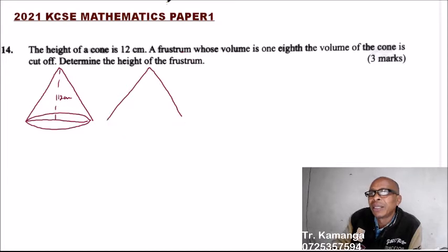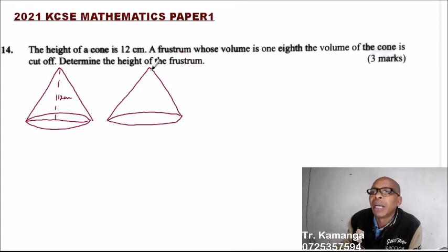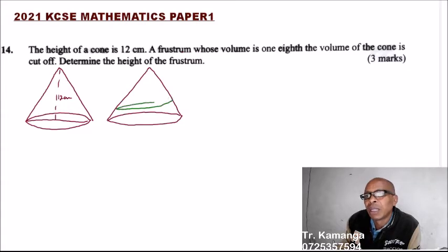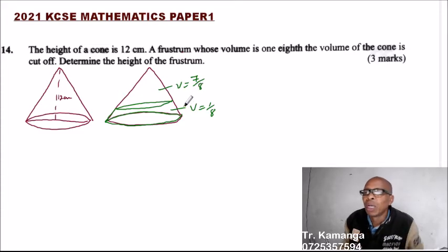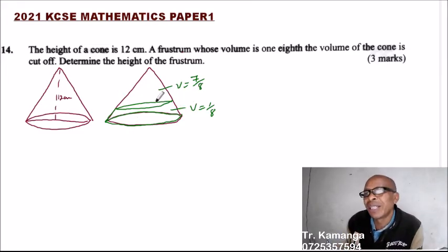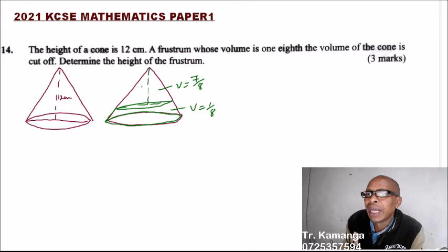So let's say this is the same cone. This is 12. But now it has been cut off. The volume of this frustum is 7/8. So let's just use h for the height of the small cone.